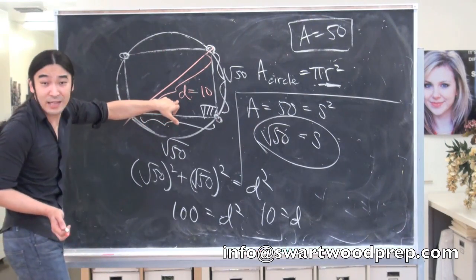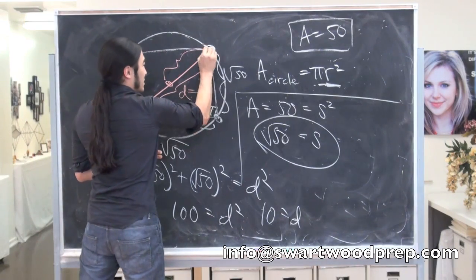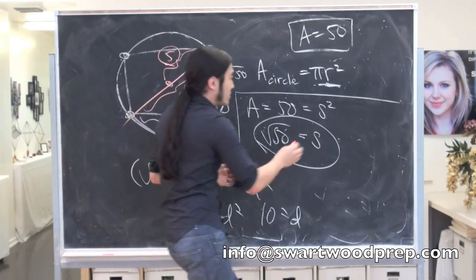But anyway, either way we get the diameter's 10. You know you don't really want the diameter, you want the radius. But that's really easy, because the radius is half the diameter, so the radius is 5. Now we're home free. So let's finish this.